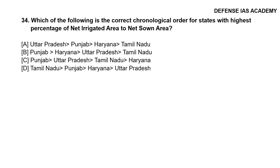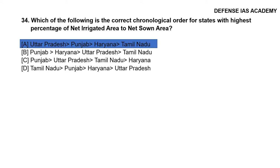Question 34: Which of the following is the correct chronological order of states with the highest percentage of net irrigated area to net sown area? The correct option is option A: Uttar Pradesh, Punjab, Haryana, Tamil Nadu.